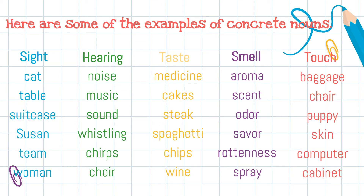Taste: medicine, cakes, steak, spaghetti, chips, wine. Smell: aroma, scent, odor, savor, roddiness, spray. Touch: baggage, chair, puppy, skin, computer, cabinet.